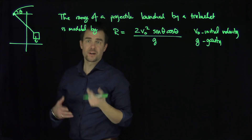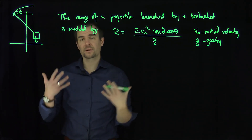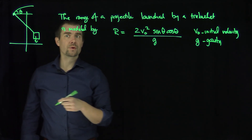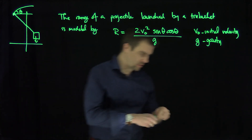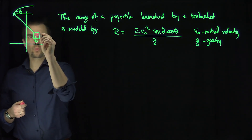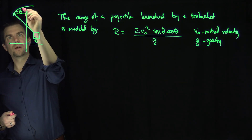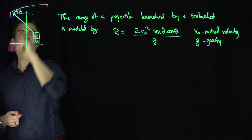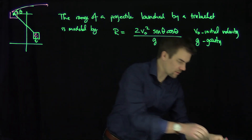We want to optimize r as a function of theta, and so we put this into the calculus wheelhouse — the standard calculus optimization methods. To do this, we'll take the derivative of r with respect to theta. The weight comes down, the arm goes up, and it launches the projectile, and I want to find the theta that maximizes the range.